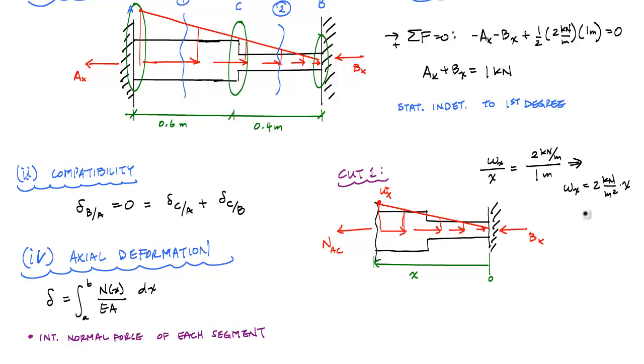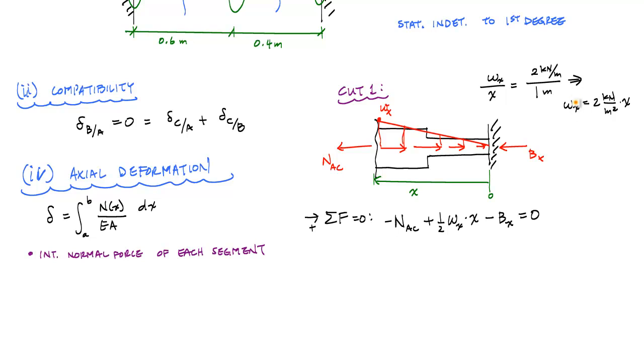And so now when I apply my equilibrium equation, I would say sum of the forces in the horizontal equals 0. I would have minus NAC plus one-half wx times x. That's the area of this little triangle. Minus Bx equals 0. And that would tell me, now I'm going to substitute. I'm going to take this wx and substitute it into here. And so now I'll have one-half 2 kilonewtons per meter squared times x squared minus Bx. And that is just x squared kilonewton per meter squared minus Bx.